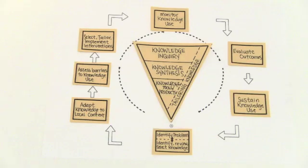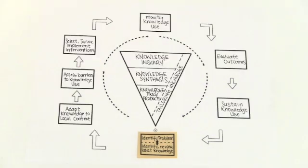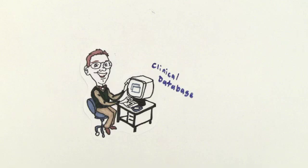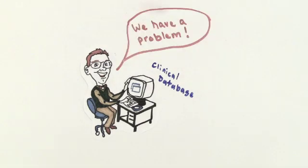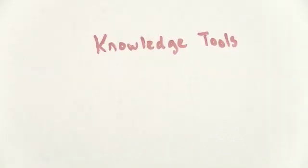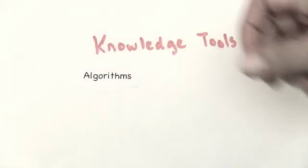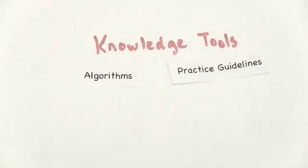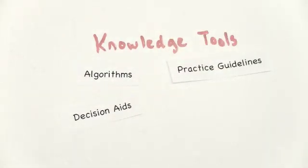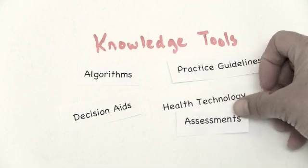Surrounding the knowledge funnel is the action cycle. The first step in the cycle is to identify an important problem and then identify, select, and evaluate a knowledge tool that can be used to address that problem. You can identify a problem using administrative or clinical databases, health records, or research results. Then find a knowledge tool like a practice guideline, an algorithm, or a patient decision aid that will help address your problem.